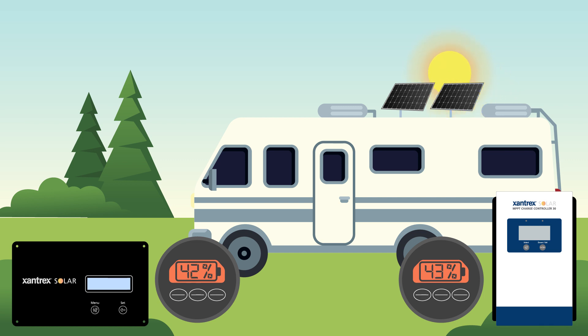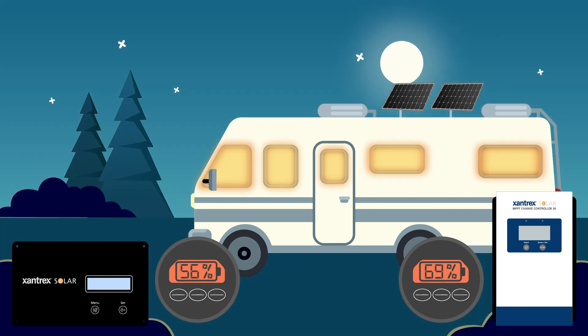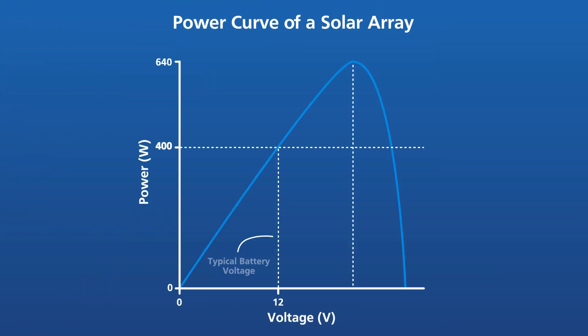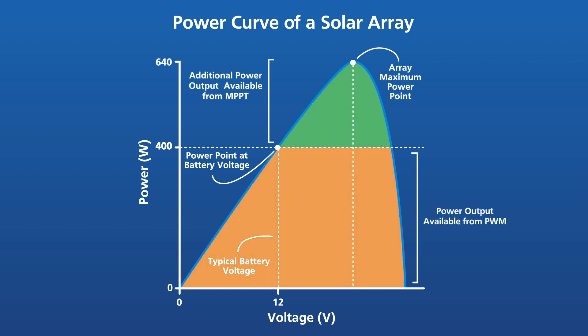The reason an MPPT is more efficient than a PWM is due to the MPPT's tracking ability to find the maximum power point for a solar array, where the simplicity of the PWM design cannot do so. The MPPT has a DC-DC converter which down converts the solar panel voltage to the battery voltage, but at the same time, up converts the battery charging current in order to maximize energy transfer.